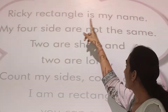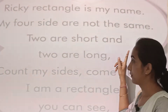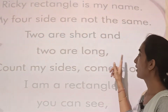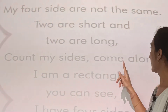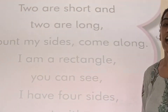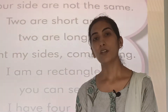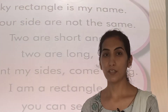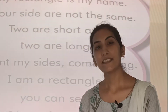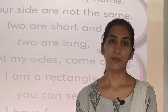'Licky rectangle is my name, my four sides are not the same. Two are short, two are long. Count my sides, come along. I am a rectangle, you can see, I have four sides, count with me.' You sent me a video voice call of the square — did you? Now if you want, you can send me a voice record of the rectangle. I will send you a worksheet; complete it and send me, okay?